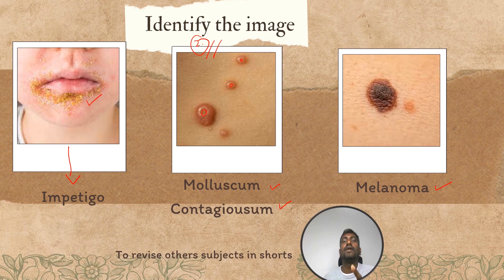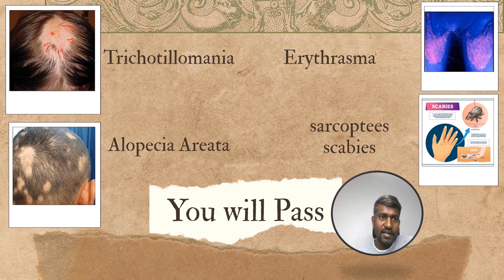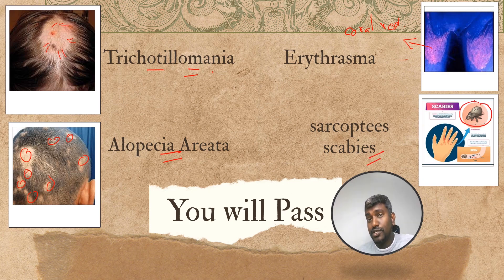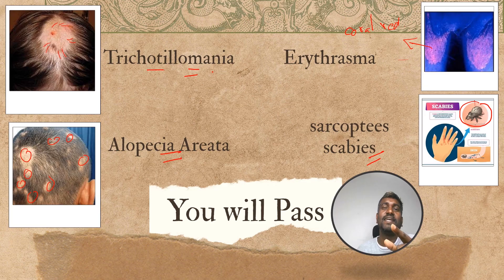The patient here who has plucked their own hairs with visible hair breakages — that is trichotillomania. Patchy hair loss is alopecia areata. Coral red fluorescence is erythrasma. Finally, scabies is caused by a mite that burrows into the skin. You're all doing an amazing job and will definitely pass — wish you all the best!